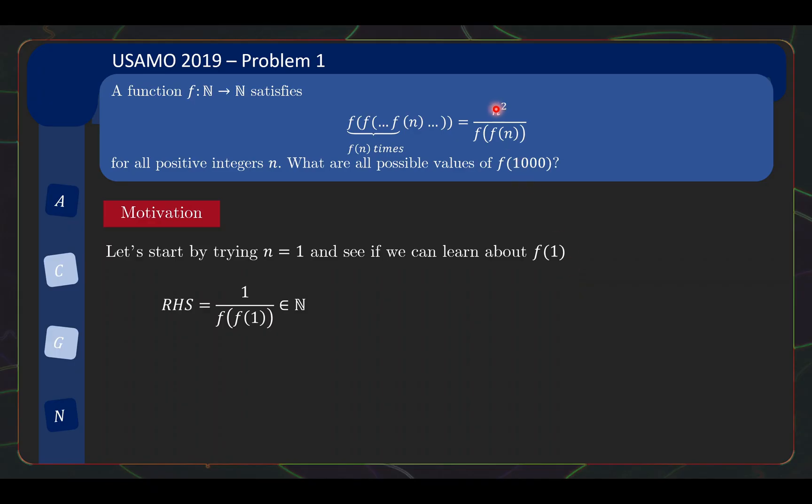Well, on the right side, you have 1 over f(f(1)). Now the key observation is that the left side is f of something, so it must be a positive integer. This implies then that f(f(1)) must be equal to 1 because anything else, 1 over that thing will not be a positive integer anymore. But can we narrow down to what the value of f(1) is? Well, of course, there are two possible things that can happen from here.